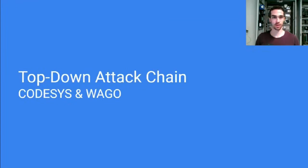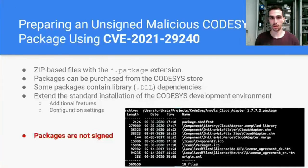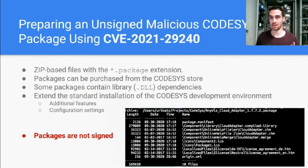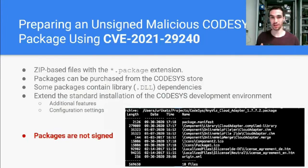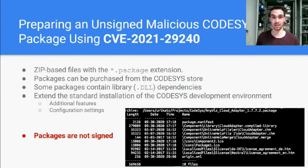The second method we developed is the top-down attack. The top-down approach starts with targeting an engineering station, and we decided to look at the Codesys packages. Packages are just normal zip files which contain dependencies and sometimes even DLLs. We discovered that those packages are not signed and we can change them to contain our malicious code. We actually made a package that, when an engineer installs it, would get his cloud credentials from the engineering station and send it back to us.